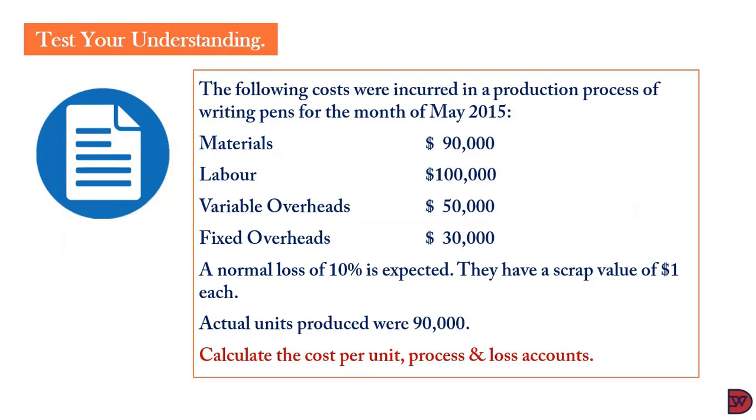The following costs were incurred in the production process of writing pens for the month of May 2015. Materials was $90,000, labor $100,000, variable overhead $50,000, fixed overhead $30,000. A normal loss of 10% is expected. We have a scrap value of $1 each. Actual units produced were 90,000. Calculate the cost per unit, process account and loss account.